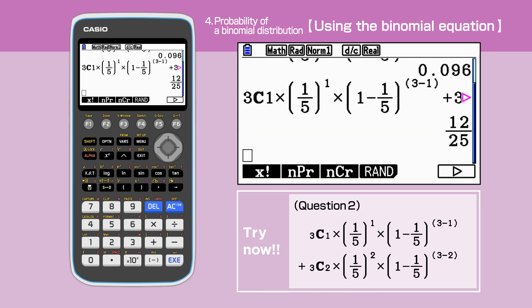The probability of drawing the winning tickets more than or equal to 1 but less than 3 is 12 over 25 or 0.48.